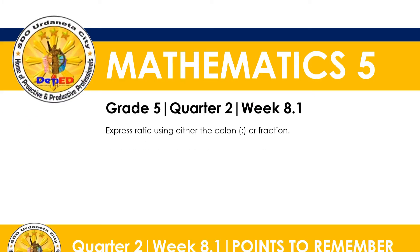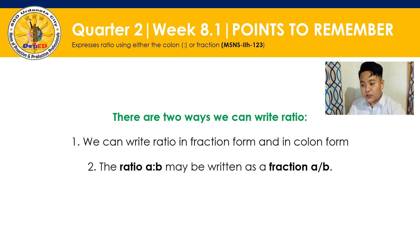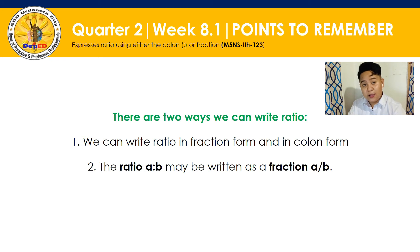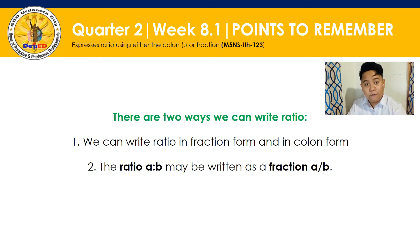Let's begin! There are two ways we can write ratio. First, we can write ratio in fraction form and in colon form. So we have fraction form and colon form. Second, the ratio A to B, or A colon B, may be written as a fraction A over B.